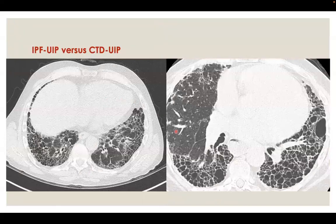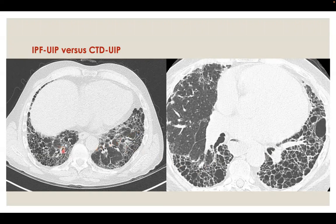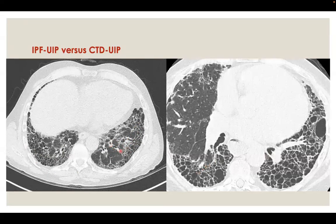This sign suggests secondary UIP because in IPF UIP, honeycombing is significant and is the dominating feature, but not to the extent shown in the exuberant honeycombing sign. In typical IPF UIP, you can appreciate variable traction bronchiectasis, irregular reticulation, and honeycombing — more in amount and extent compared to these features, but more or less there is balance in the presence of fibrosis. In the exuberant honeycombing sign, almost all the findings are honeycombing.